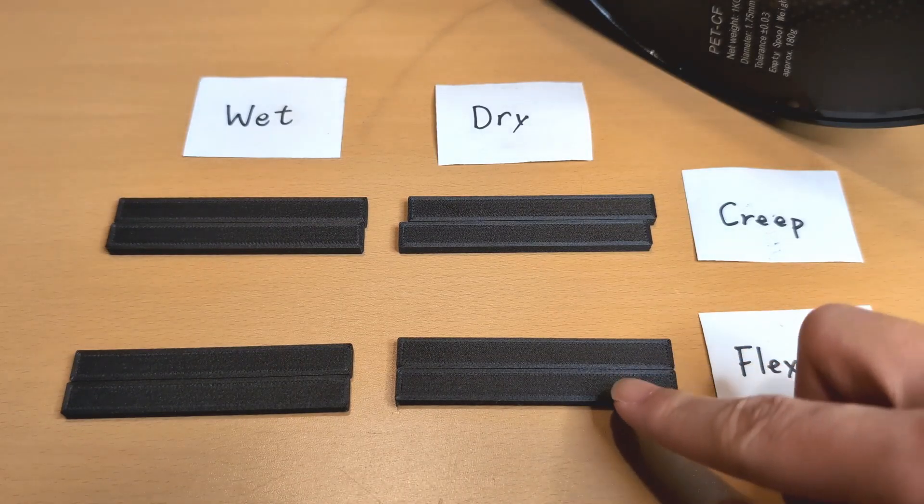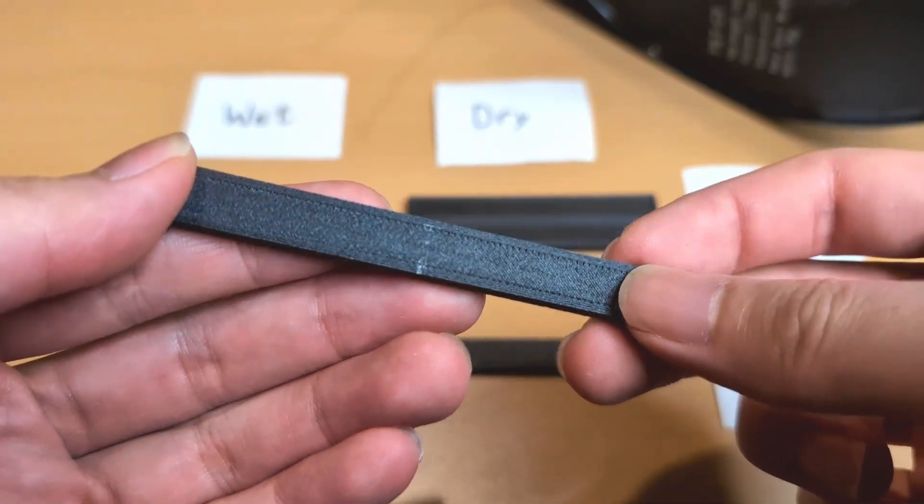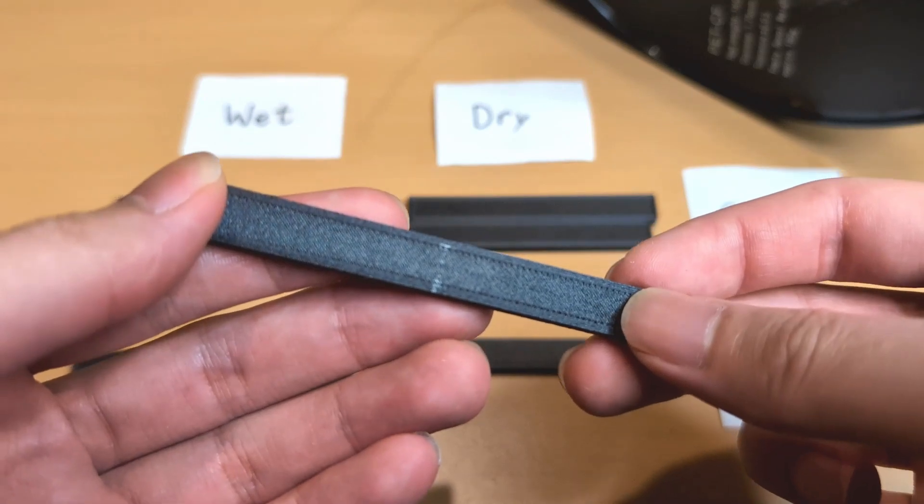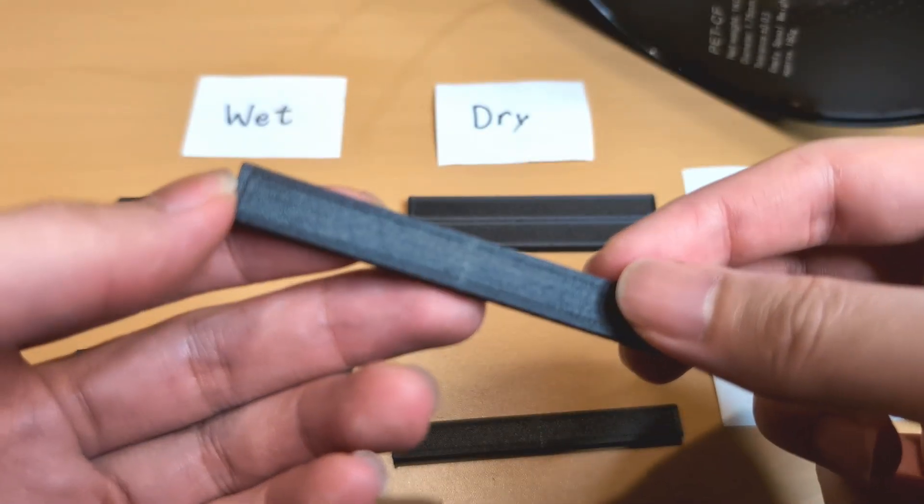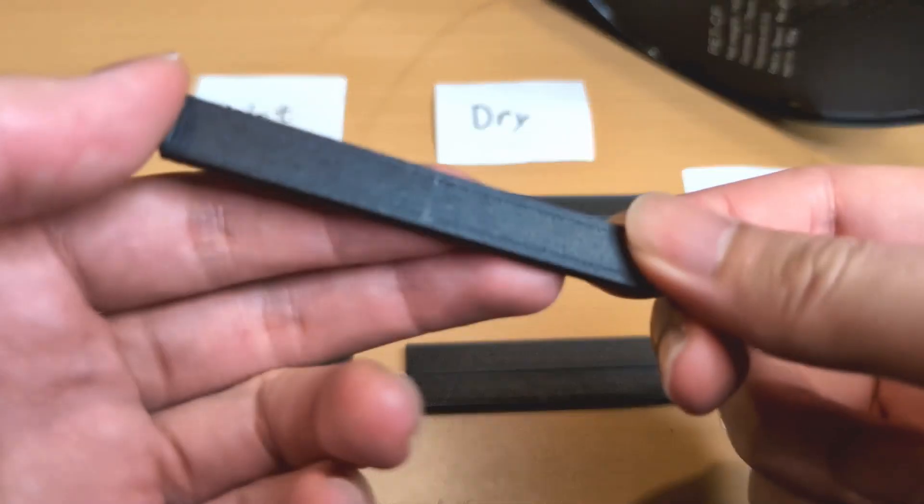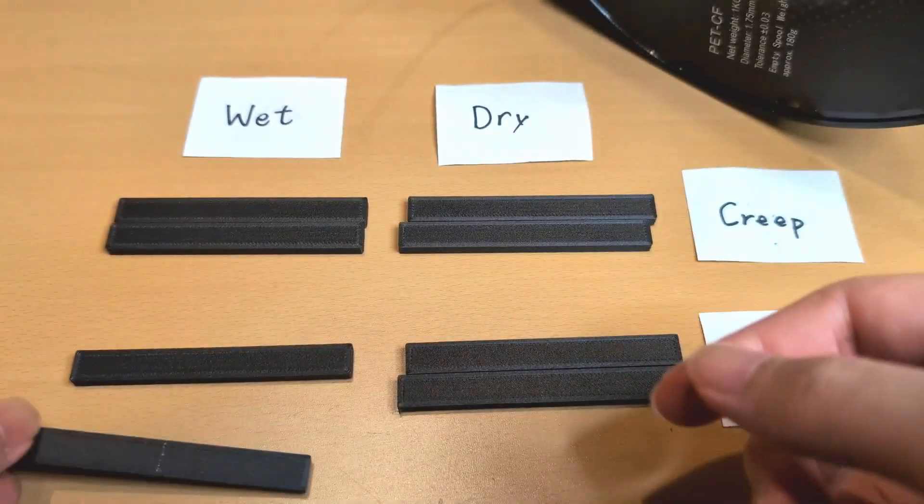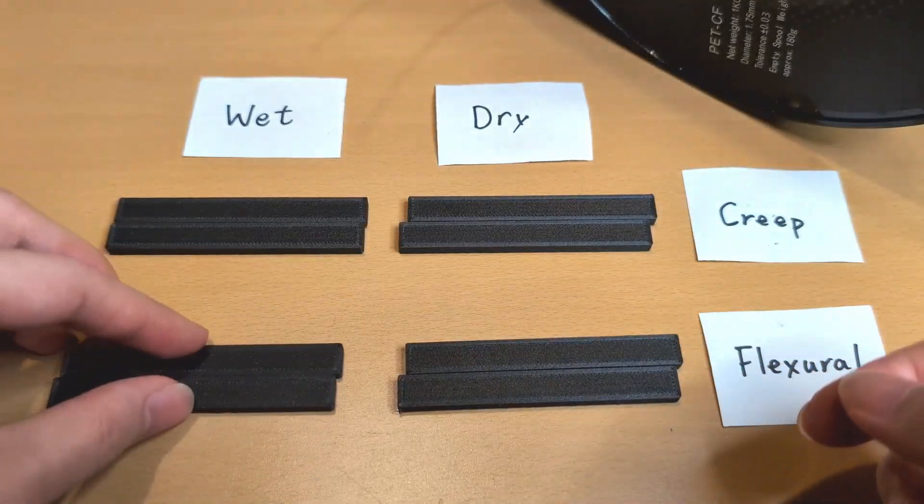This material is easy to print and does not require special treatment on the print bed. It generally adheres well to the PEI sheet without warping, and there is no noticeable shrinkage after printing. Additionally, PET has excellent properties when resisting heat and moisture compared to PA-based materials.